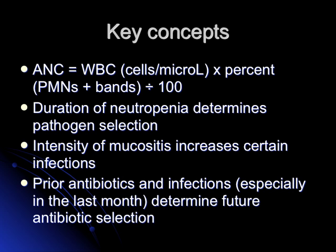I wanted to illustrate a few important concepts. The total neutrophil count and how to calculate it — there is a formula you can use. It is also important to know for how long the neutropenia lasts. It's not the same to have somebody neutropenic for only seven days versus a month or even three months. The risk of infections goes up as the period of neutropenia extends.